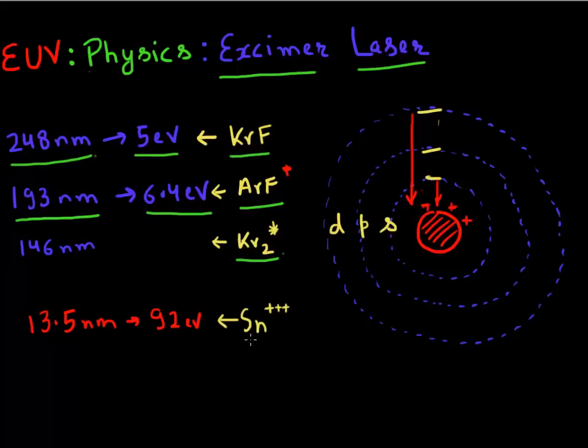What they commonly use is tin, and that too a very excited state. Tin with three or four electrons already removed from it. So it's highly positively charged. And then these D level of electrons, when they transition back, they generate this photon which has this very high energy of 92 electron volts.